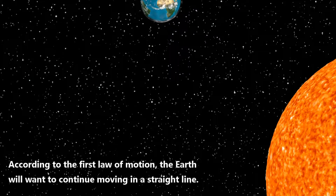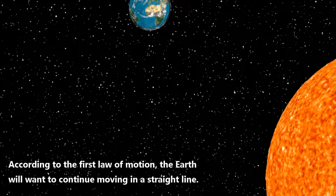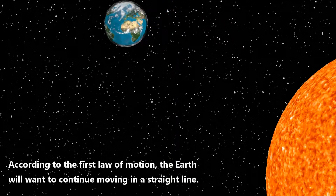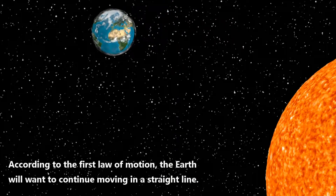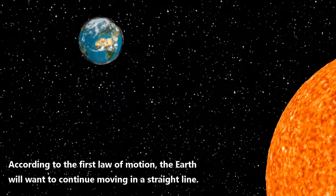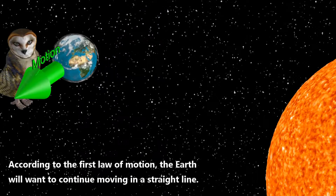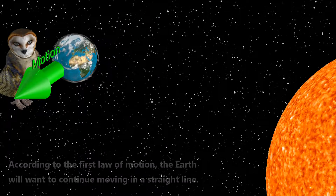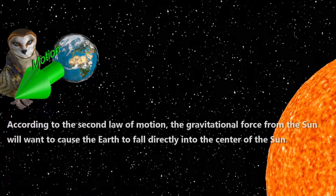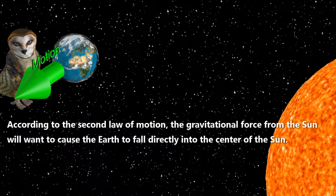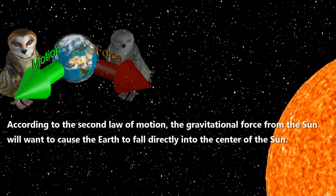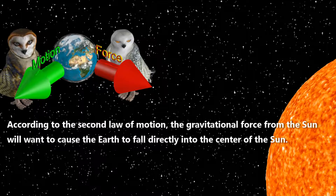According to the first law of motion, the Earth will want to continue moving in a straight line. According to the second law of motion, the gravitational force from the Sun will want to cause the Earth to fall directly into the center of the Sun.